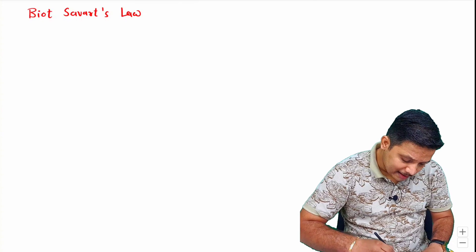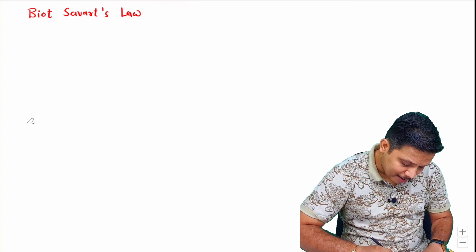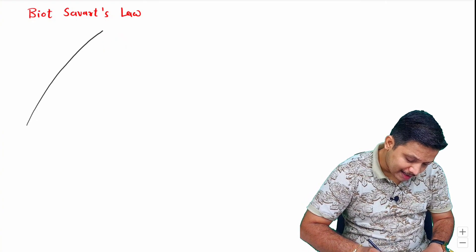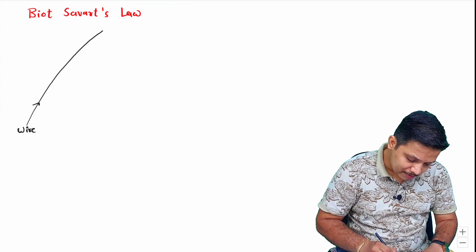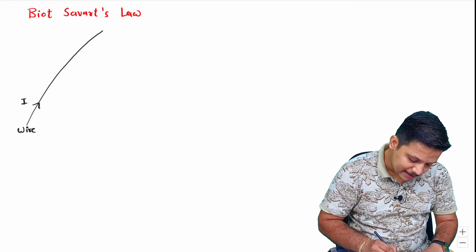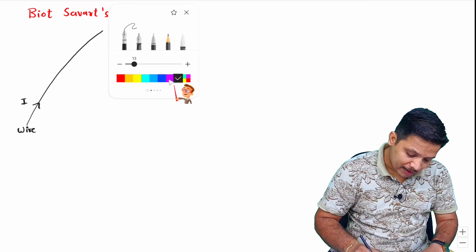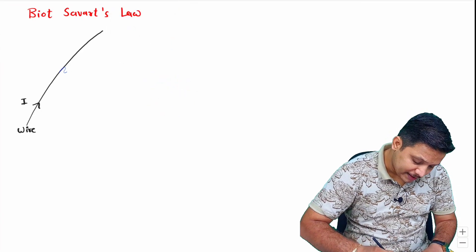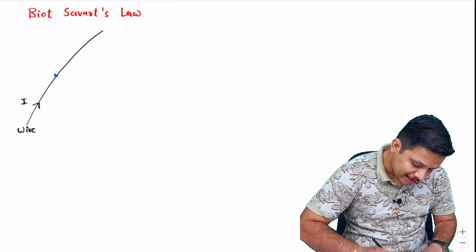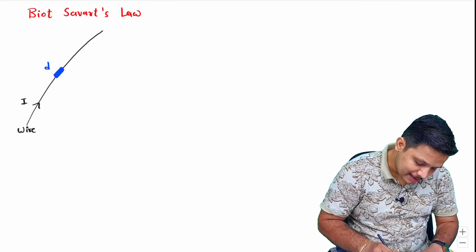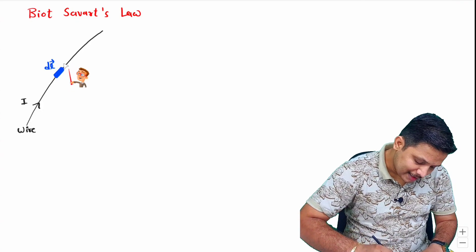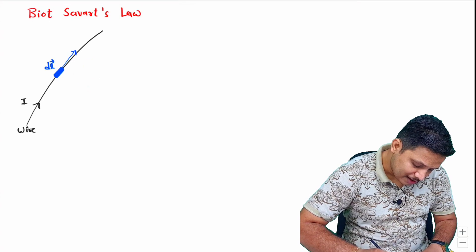If we have a current-carrying wire — this is the wire I am considering right now — let us say current I is passing through it. If I want to calculate the magnetic field intensity due to a small differential length DL, this is what that small differential length looks like, and its direction will be tangent to the curve.